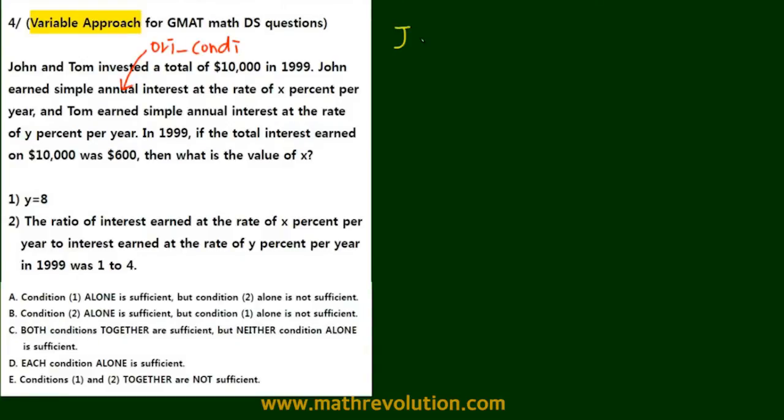Now what we can do is change the original condition according to the variable approach. j plus t is equal to 10,000, which means that j times x over 100 plus t times y over 100 is equal to 600, because that's the interest.